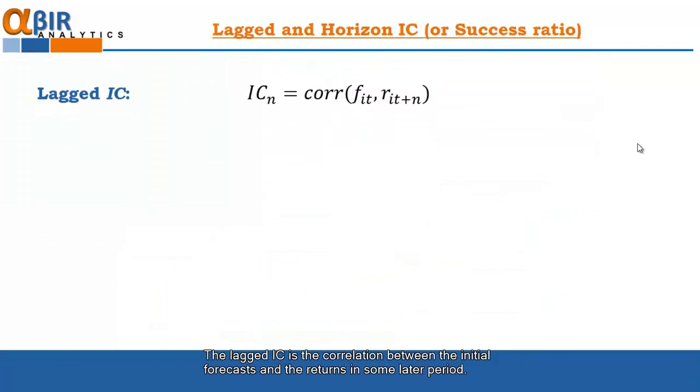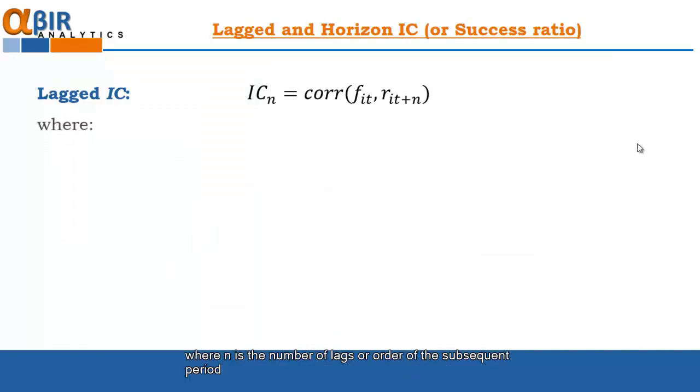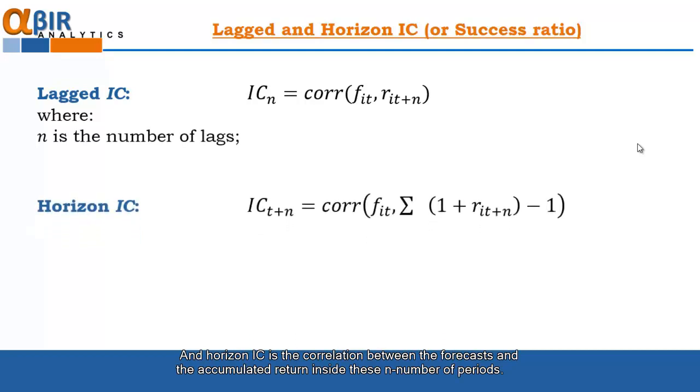The lagged IC is the correlation between the initial forecast and the returns at some later period, where n is the number of lag or the order of the subsequent period. And the horizon IC is the correlation between the forecast and the accumulated return inside these n number of periods.